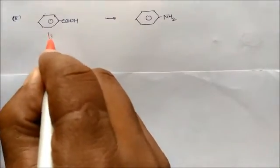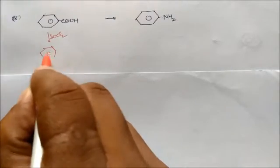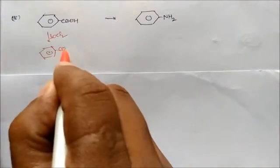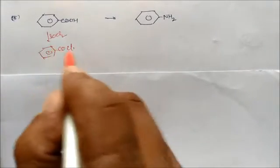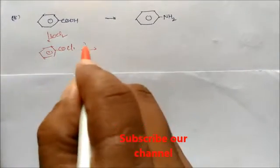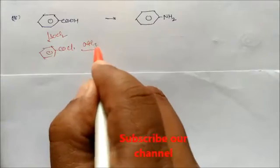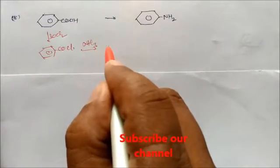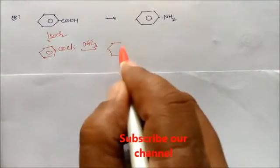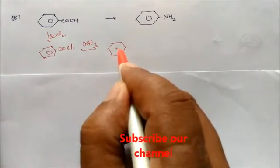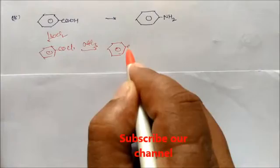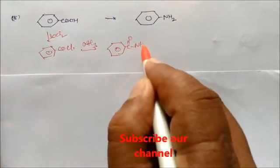Use SOCl2 — the OH will be removed and you will get benzoyl chloride, COCl. Then give ammonia, and you will get benzamide, where Cl is replaced by the amide group.